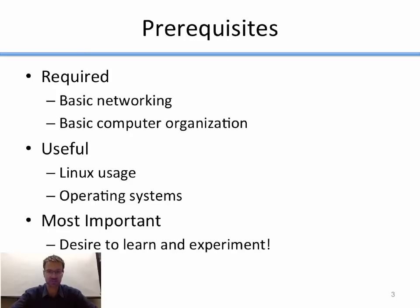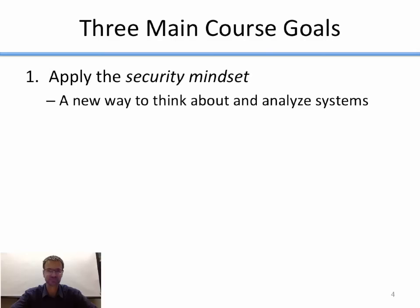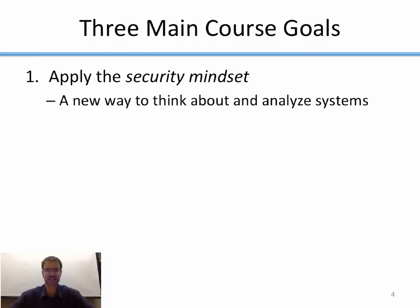The most important thing you need for this class is a desire to learn and experiment. There are three main course goals. The first is I want you to learn how to apply the security mindset — a way of thinking about problems and systems from a security perspective. You begin to think about how to improve those systems to make them more secure, or how you could break them. Once you have the security mindset, it becomes something you do naturally.